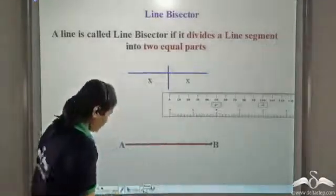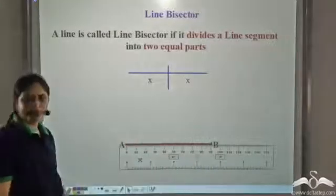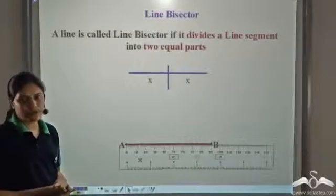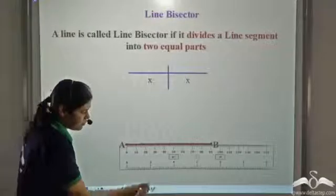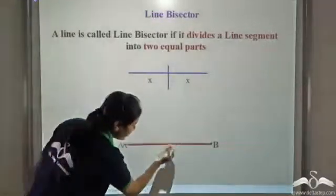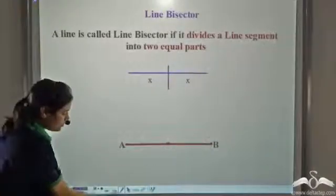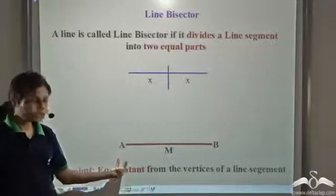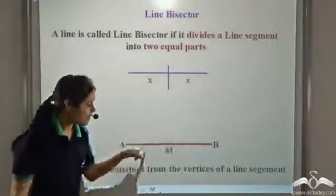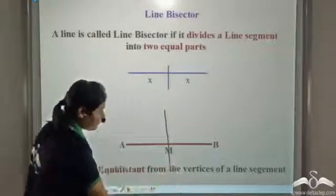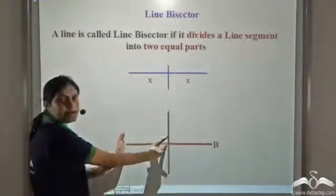We take a scale and see that the length of AB is 90. Half of 90 is 45, so we mark a point at 45. This point is equidistant from A and B, so it is called the midpoint M of AB. Now we draw our line bisector through M, and it divides AB into two equal parts.